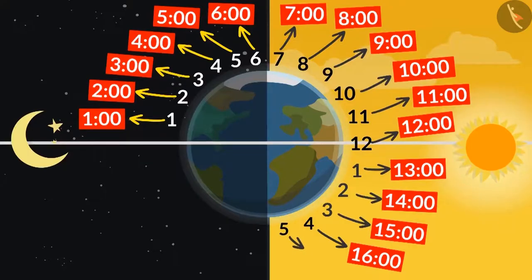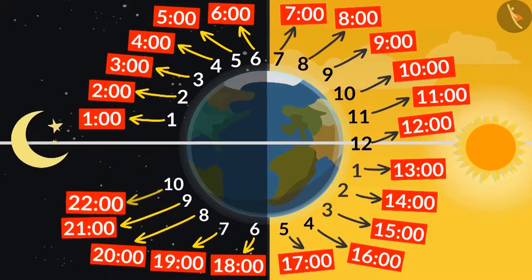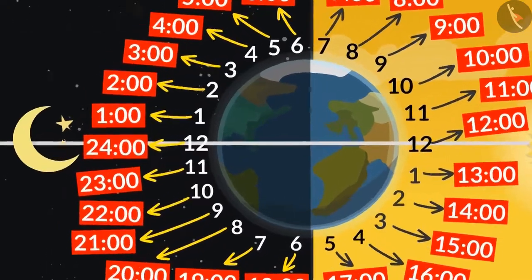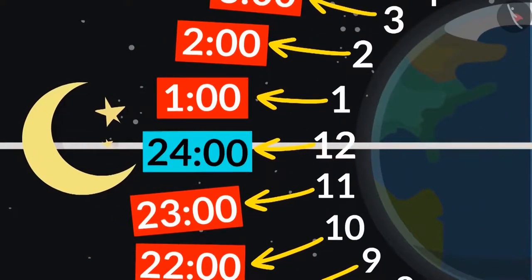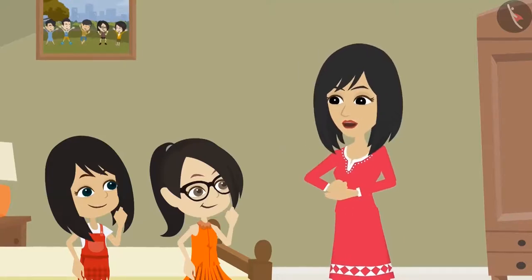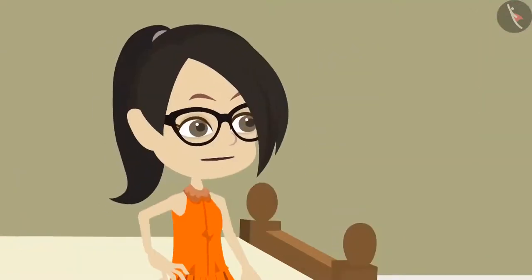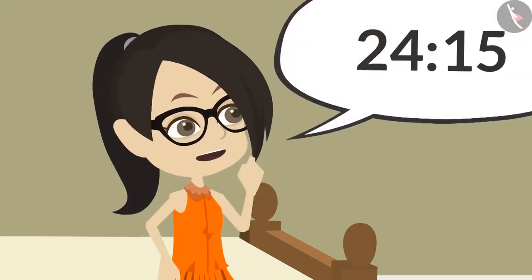Okay. If 5 o'clock in the evening is 17, then 6 will be 18, 7 will be 19, then 20, 21, 22, 23, 24. That is, 12 o'clock at night will be written as 24:00. You found it correctly, Neha. If it is 15 minutes past 12 o'clock at night, then how will we write it? 24:15?